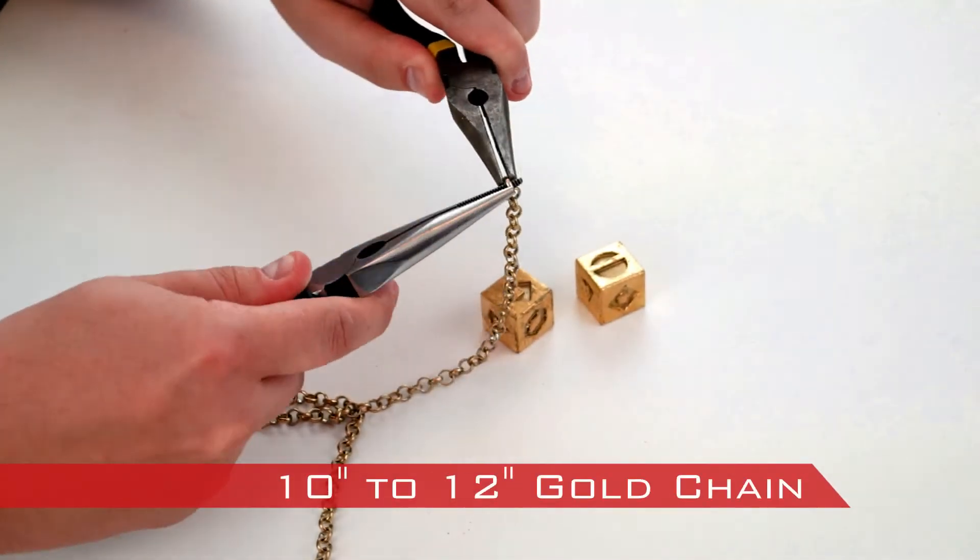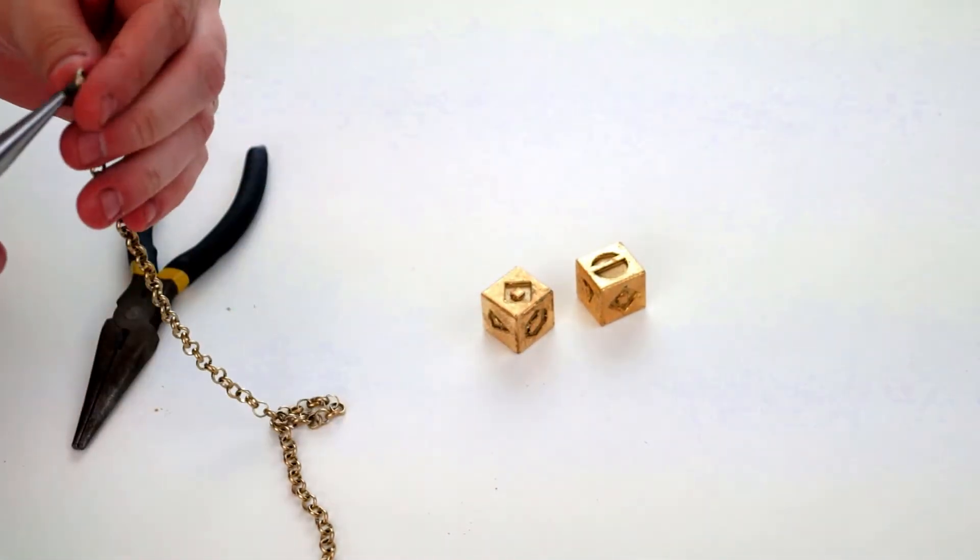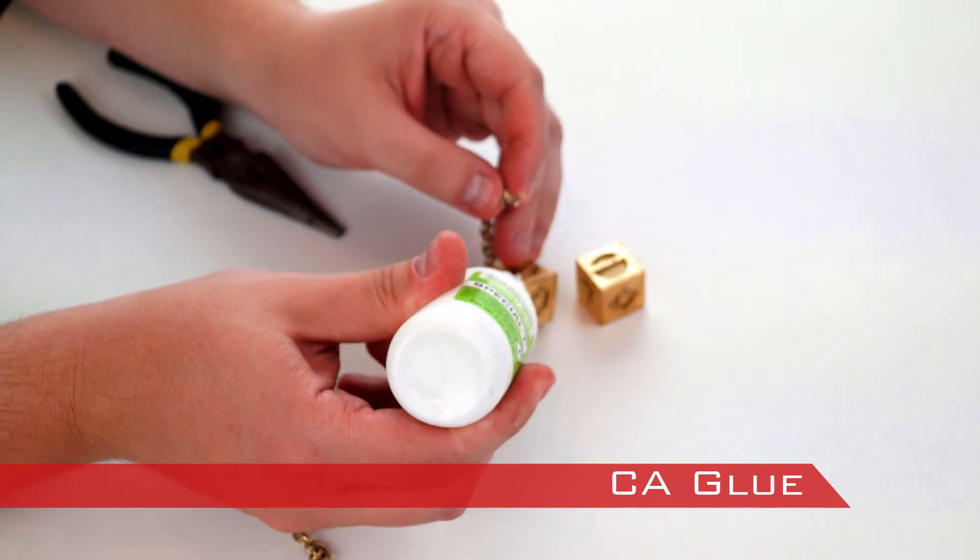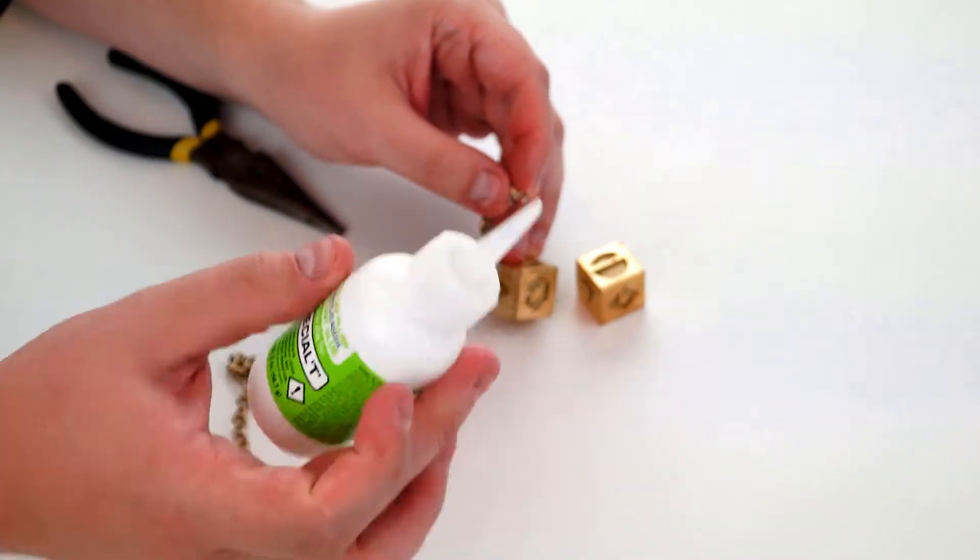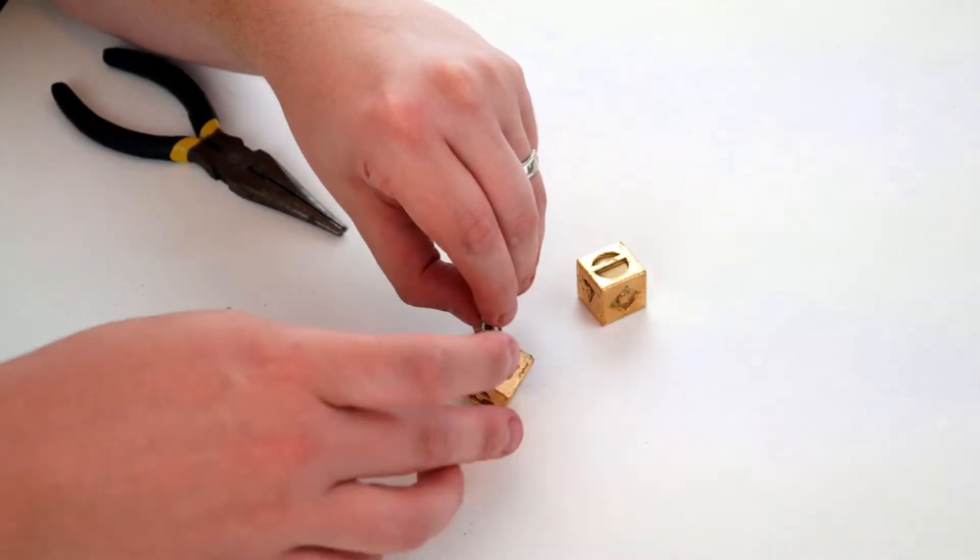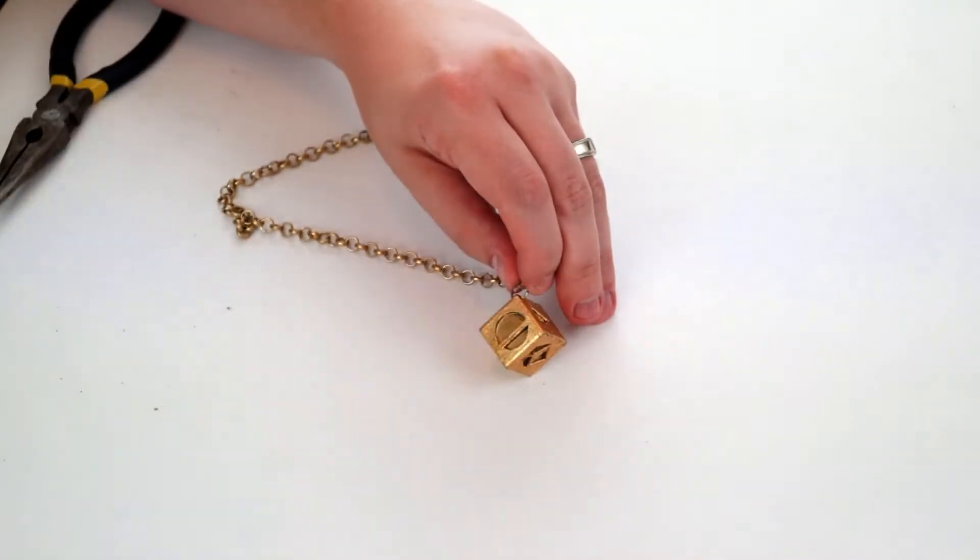Next I took a gold chain that was about 10 to 12 inches and opened the end with pliers. Then glued this end onto the corner where I had removed the printed loop with CA glue. This step was repeated with the other end of the chain and the other dice.